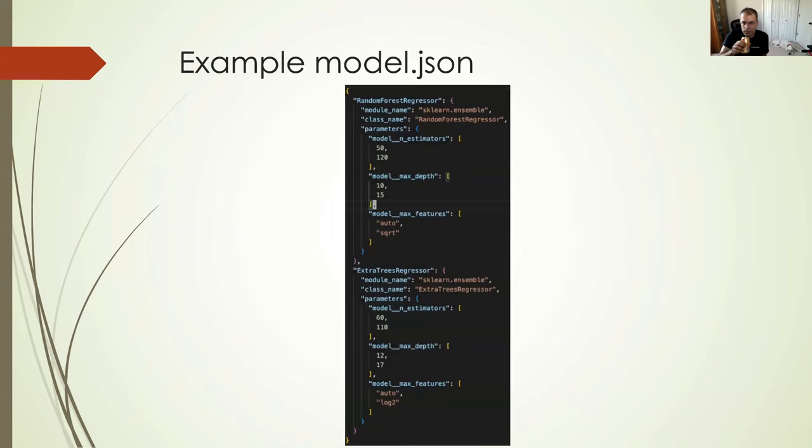This is an example of a models.json. Here, we're training two models: random forest regressor and extra trees regressor. The hyperparameters are specified under parameters. Each has three hyperparameters. For each hyperparameter, you can see there are two possible values. So I'm changing the number of estimators for random forest regressor - I'm going to train 50, then 120. Then I specify the max depth of the tree, could be 10, 15, 20. And how the max features are selected - it could be automatic, it could be square root of the number of features.